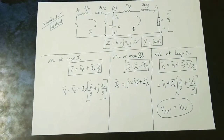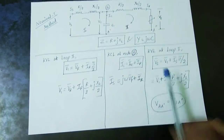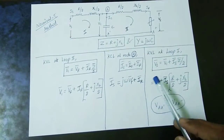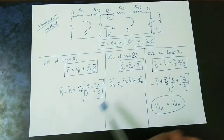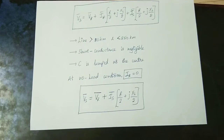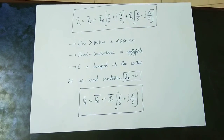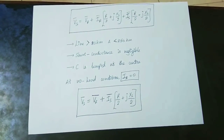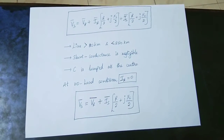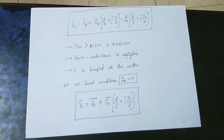What we have done is derived V1 and substituted it into the sending end voltage equation. So the sending end voltage Vs is expressed in terms of VR, IR, and the circuit parameters. This gives us the complete ABCD parameter analysis for the nominal T model.